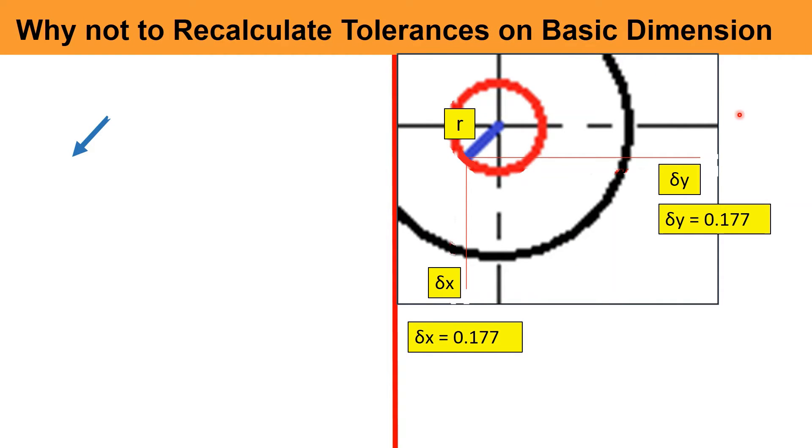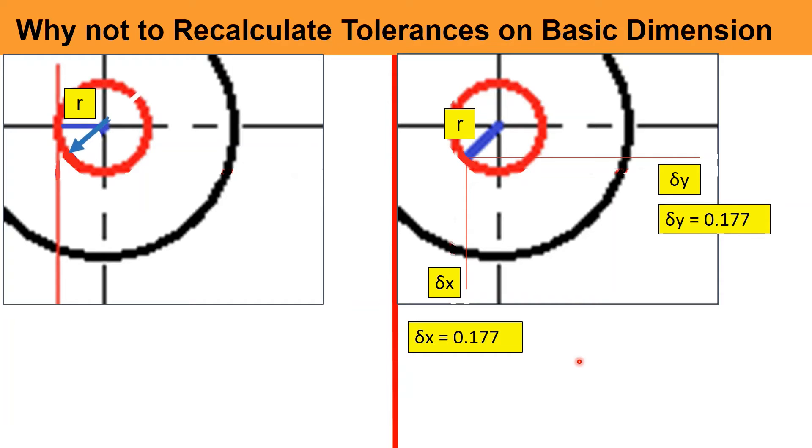Let us discuss now, why not to recalculate the dimensional tolerances from geometrical one. For this, please view another picture where point P is not at 45 degrees to axis but at 0 degrees or 180 degrees. In the case given, delta Y becomes 0 and only delta X is having value.